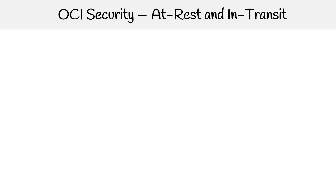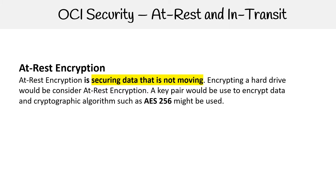We briefly mentioned at rest and in transit encryption, but I didn't really explain what those are. At rest encryption is securing data that is not moving — encrypting a hard drive would be considered at rest encryption. You'd use something like a key pair to encrypt your data and a cryptographic algorithm such as AES-256. The key thing to take away is that at rest encryption is when you're securing data when it's not moving.